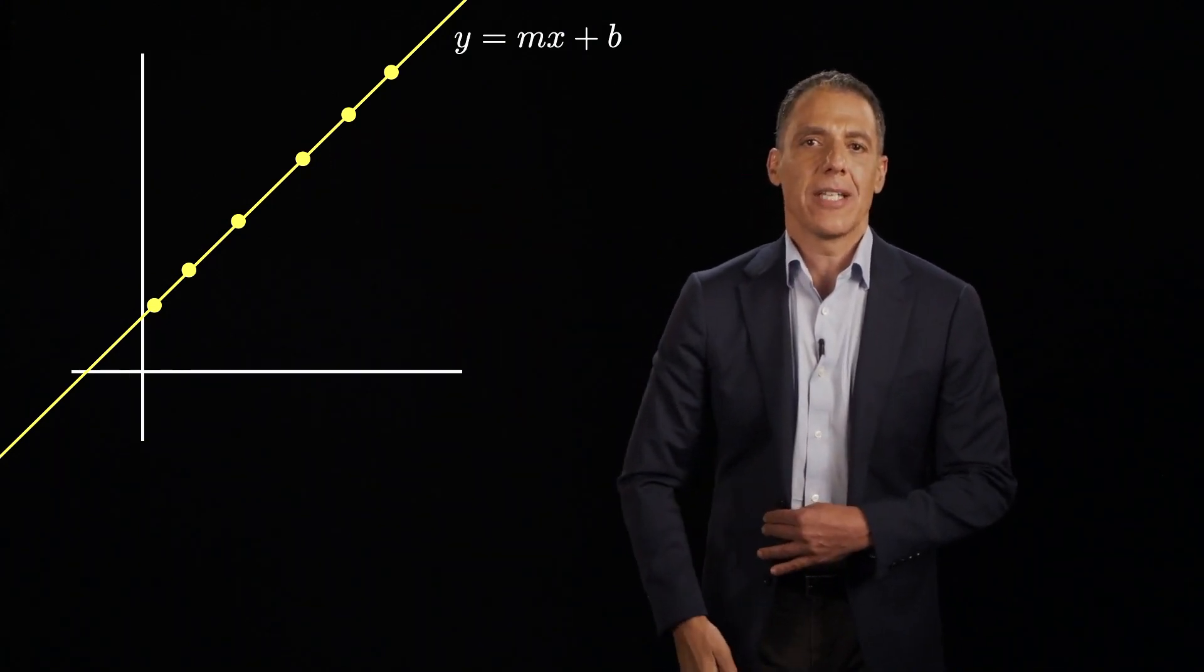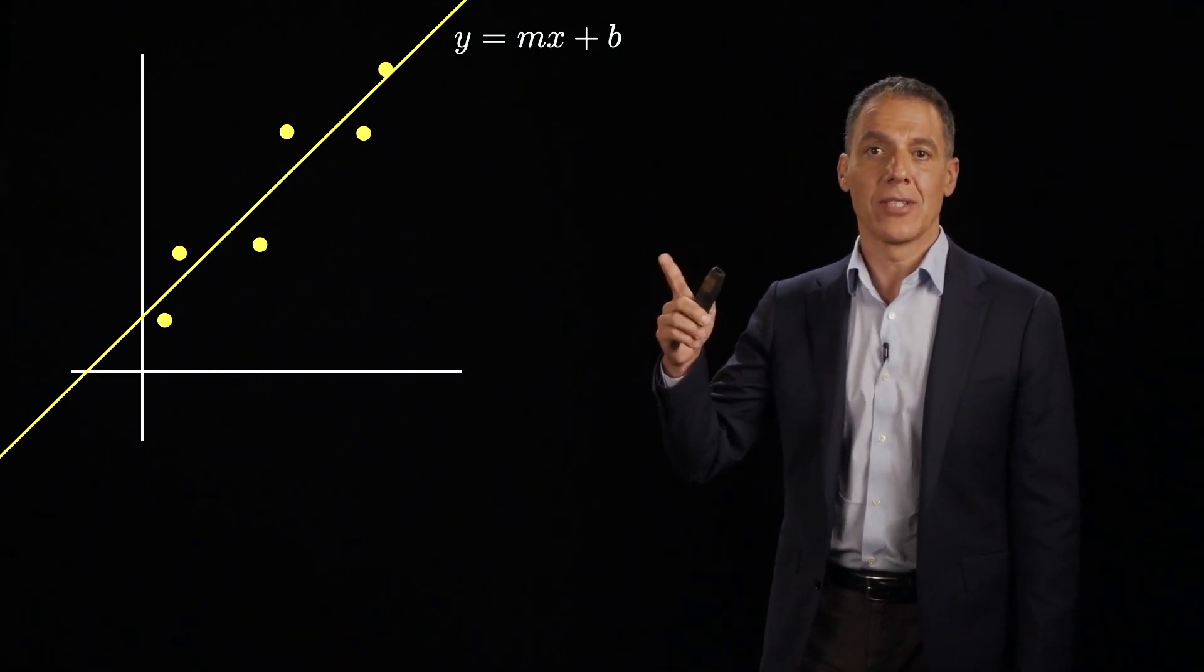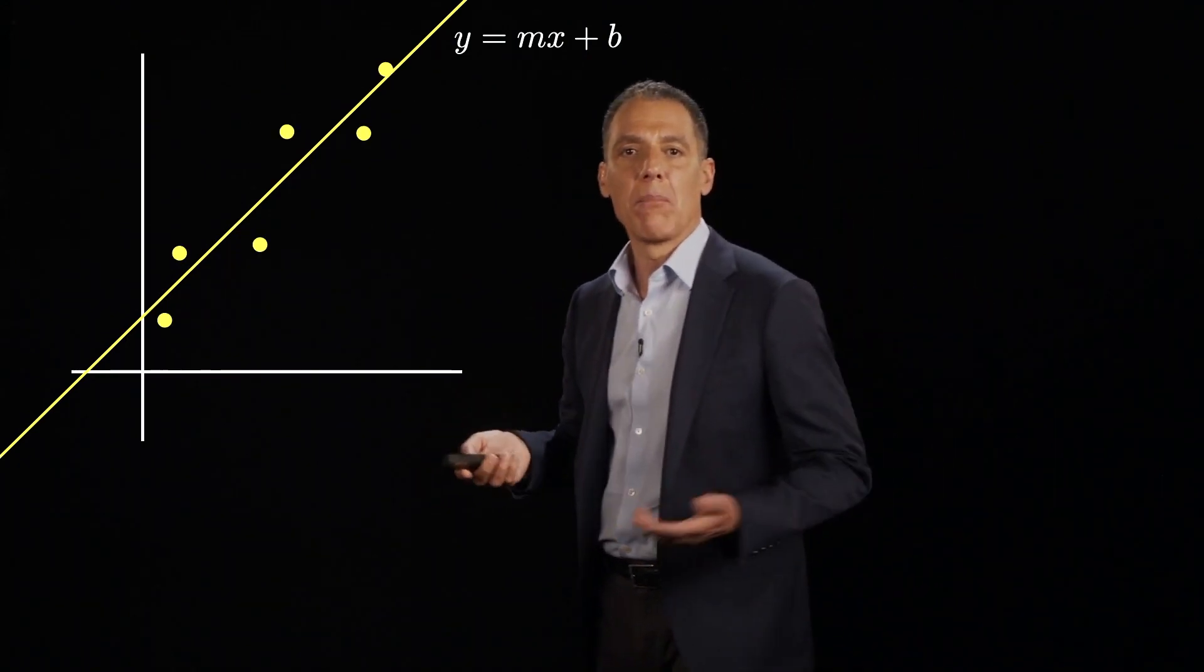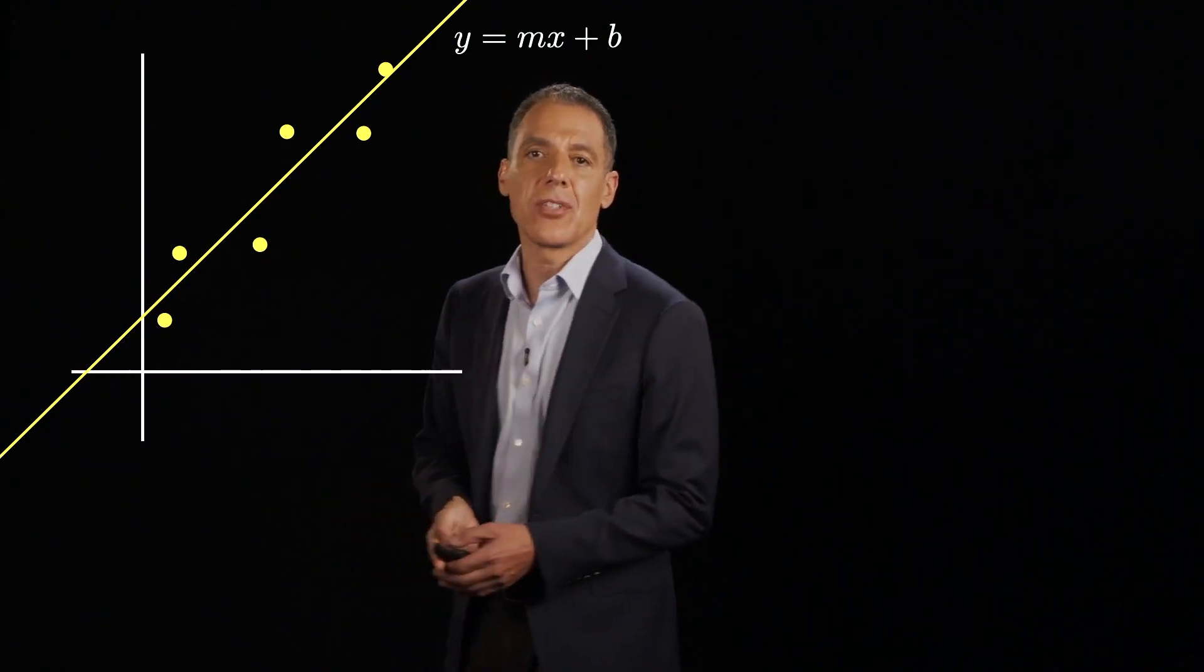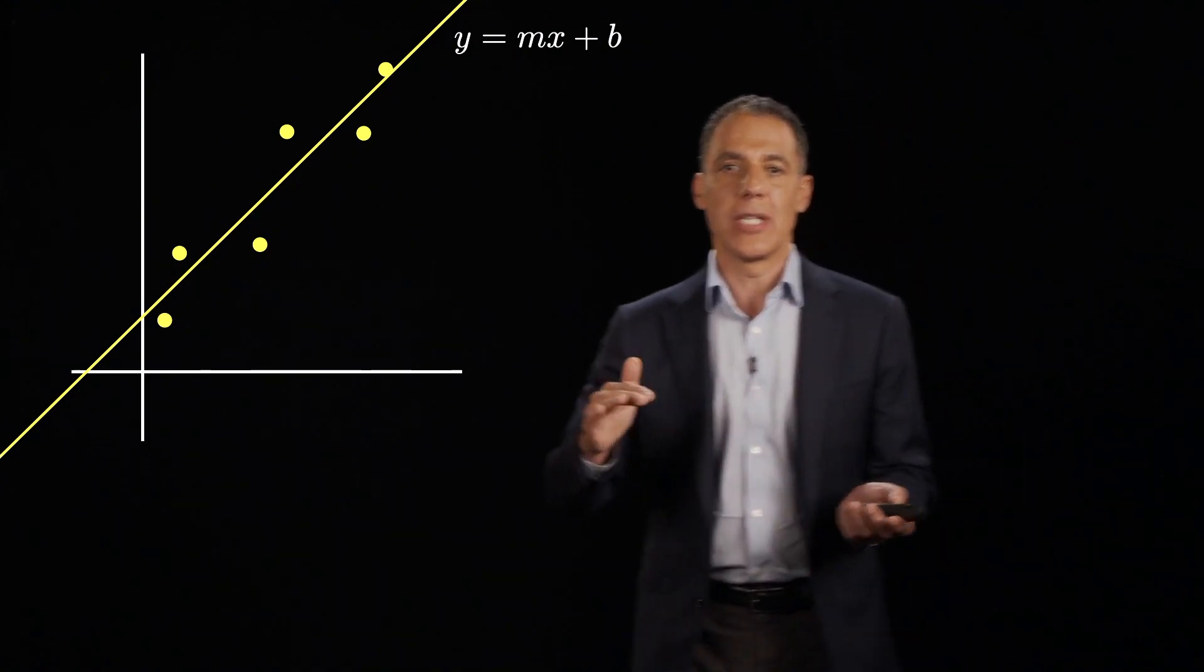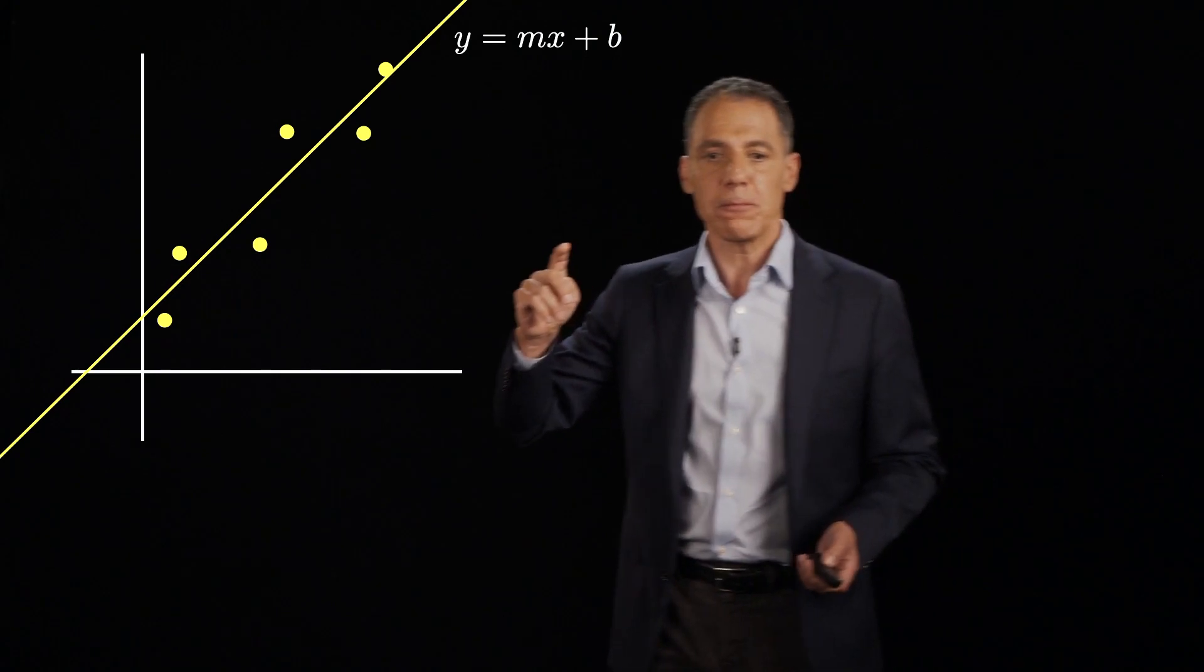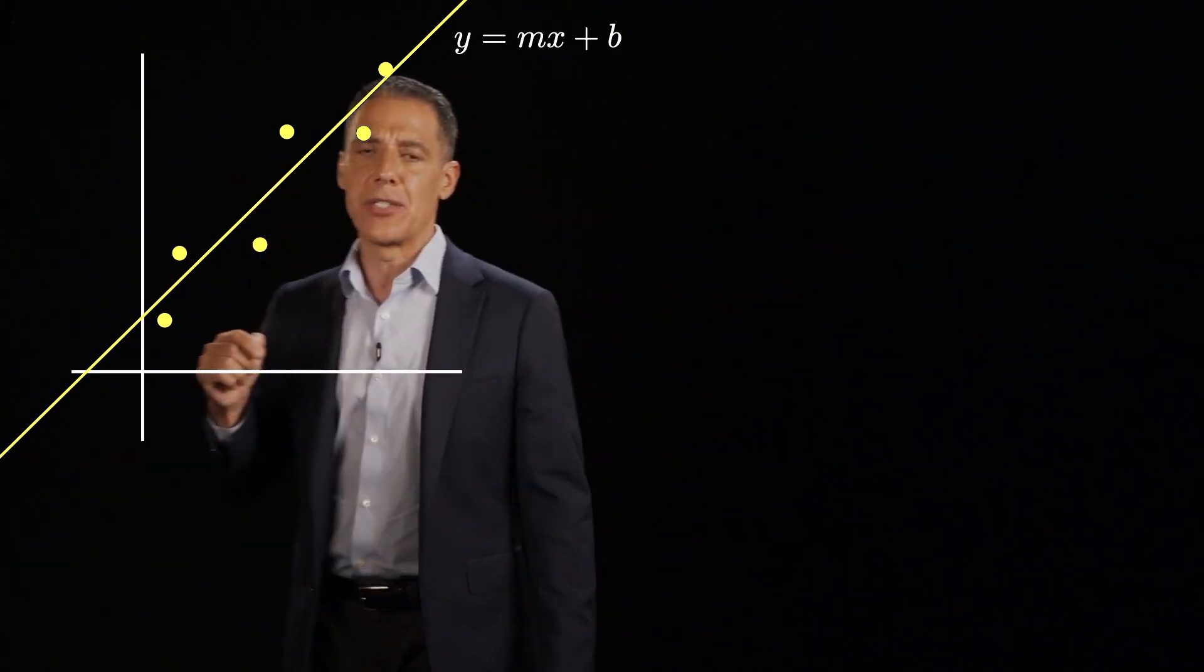It never looks like this. At best, it's going to look something like this, where you have some slop. The models are approximations to what the underlying physical mechanism is, the relationship between whatever this axis is and whatever the vertical axis is.